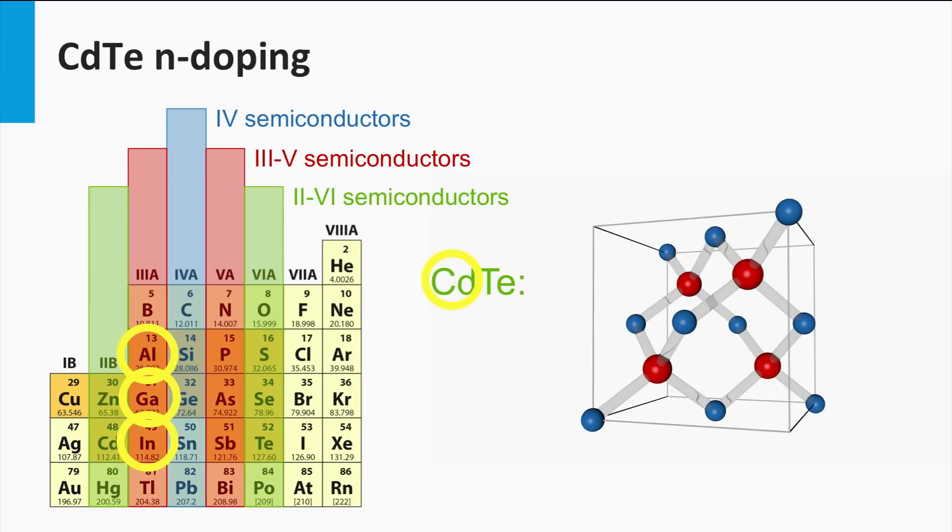N-doping of cadmium telluride can be achieved by replacing the two valence atom cadmium with a three valence electron like aluminum, gallium and indium. These elements act as shallow donors.